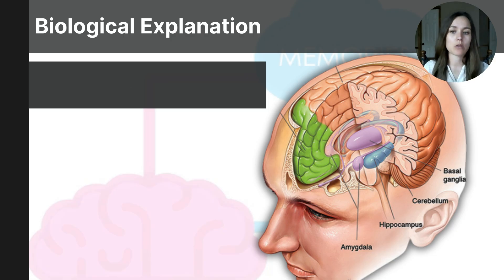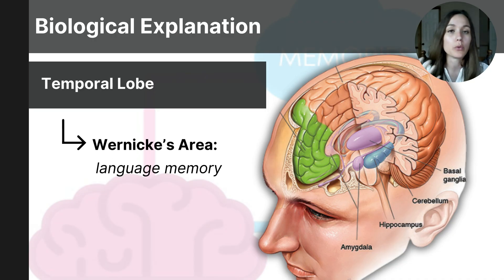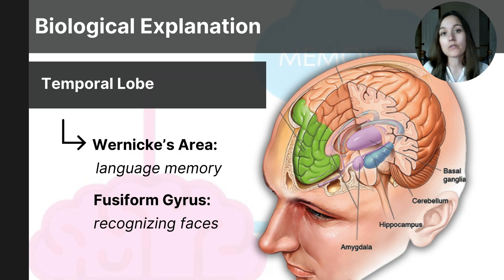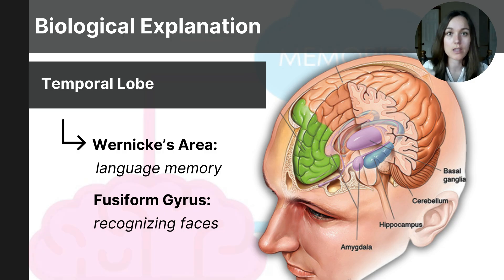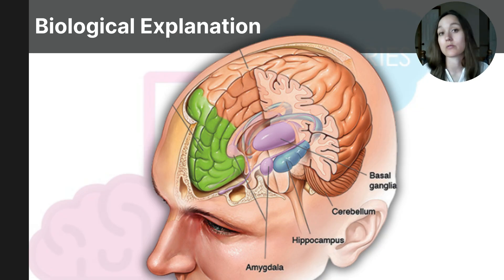Finally, the last part of the brain where memory is processed is the temporal lobes. The temporal lobes house Wernicke's area, especially on the left side, which is where our understanding of language is. This is where our memory for language is housed, as well as the fusiform gyrus — the part of the brain responsible for recognizing objects, specifically faces. If the fusiform gyrus is damaged, it can cause prosopagnosia, which inhibits the ability to recognize facial features.